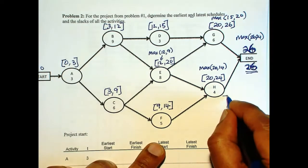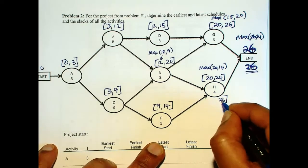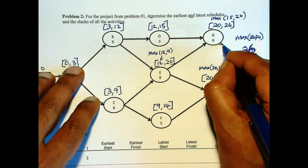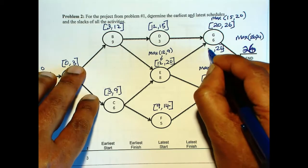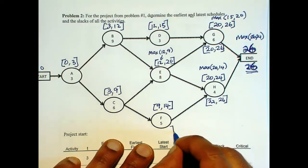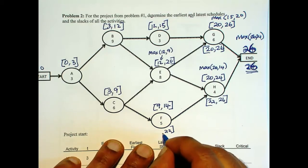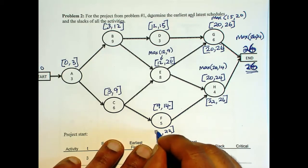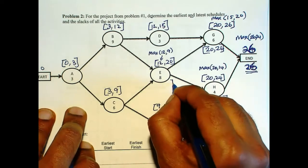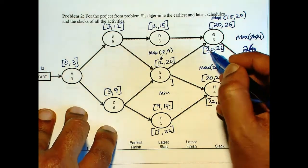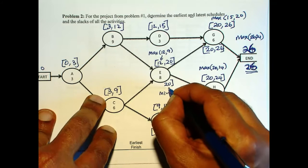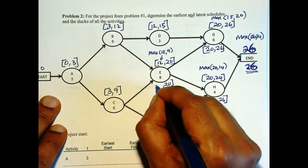And now we go 26 minus 4 is 22. Go back this way. 26 minus 6 is 20. So don't use 24 here. 26 is what you have to use. And here, 22 minus 5 is 17. Here, we have two arrows going out. So we need to use the minimum between 20 and 22. So 20. And minus 8 will be 12.